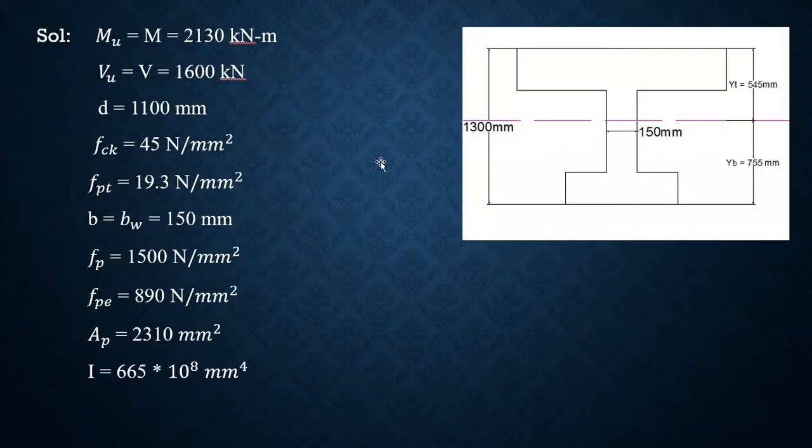Here the diagram is not given, we should write it by ourselves. As I said, it is unsymmetrical, so I have written the top flange is having more length than the bottom. This is yt, yb from the centroid, and thickness of the web is 150 mm, overall depth is 1300 mm. Like this we should draw a diagram.